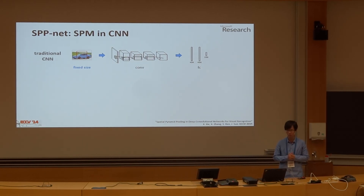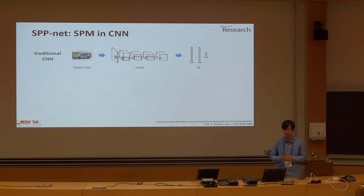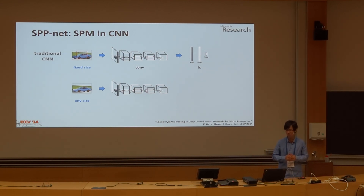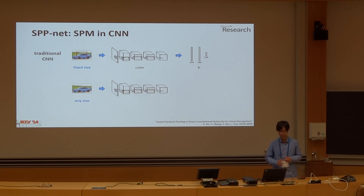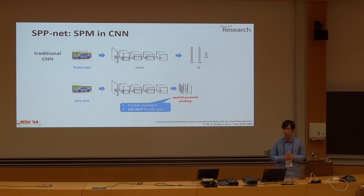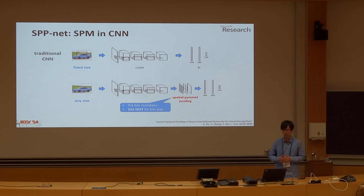Here is a traditional CNN structure. Given an image, we usually have to fix the input size of the network, and then apply the convolutional layers and then the FC layers. In our model, we allow the input image to take any sizes, both during training and during testing. On any size image, we can still apply the convolutional layers because they are just sliding filters — they do not depend on image size. After that we will have a feature map of any size. We introduce the spatial pyramid pooling layer to solve this problem: we fix the number of bins in the pooling layer but do not fix the bin size. This is in contrast to traditional sliding window pooling. After that, we can have a fixed-length image representation and put it into the FC layers.